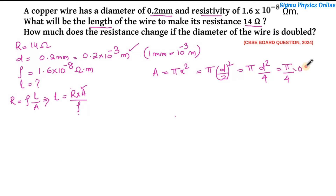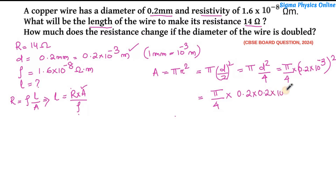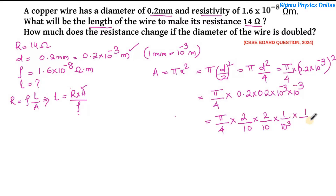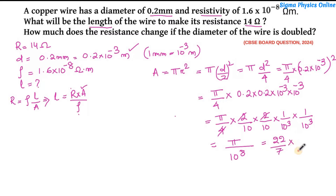Now substituting the diameter as 0.2 × 10⁻³ m, the area becomes (π/4) × (0.2 × 10⁻³)², which is (π/4) × 0.04 × 10⁻⁶. Simplifying, this gives π × 10⁻⁸, and using π = 22/7, the area is 22/7 × 10⁻⁸ m².